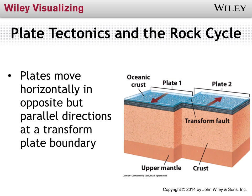The third option is two plates moving parallel to each other in opposite directions — what's called a transform plate boundary. These plates may not be moving constantly; pressure might be building up as plates are forced together. Eventually, when there's enough tension, those plates may shift suddenly. It may not be much movement, but the friction and sudden small movements create earthquakes.